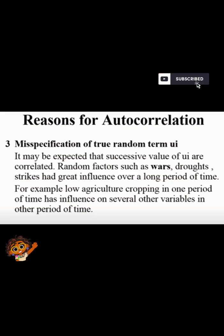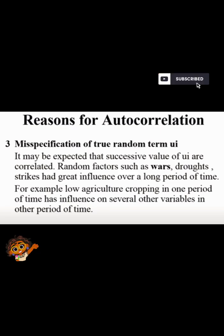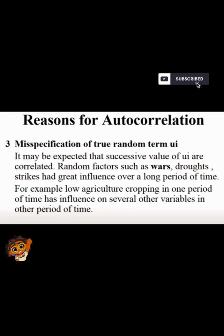To remove the autocorrelation problem we can use the Durbin-Watson test. The value of D lies between 0 and 4. There are some consequences of autocorrelation: first, OLS estimators are still unbiased and consistent, because unbiasedness and consistency do not depend on assumption 6; however, the OLS estimator will be inefficient and therefore no longer BLUE. The estimated variance of the regression coefficients will be biased and inconsistent, and therefore hypothesis testing is no longer valid. In most cases the R-squared will be overestimated and the T-statistic will tend to be higher.